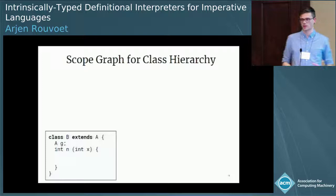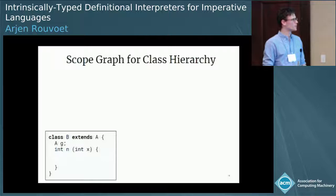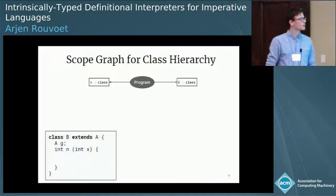We've used a very general syntax of graphs to describe this very simple binding structure, so you may imagine how this could generalize. We could have scopes with multiple declarations, and we could easily have scopes with multiple parent scopes. We can use that more expressive power to describe the binding structure of a simple class hierarchy as it appears in Middleweight Java.